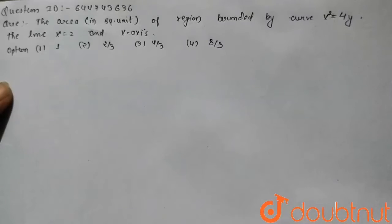In this question, the area of the region bounded by the curve x squared equals 4y, line x equals 2, and the x-axis.